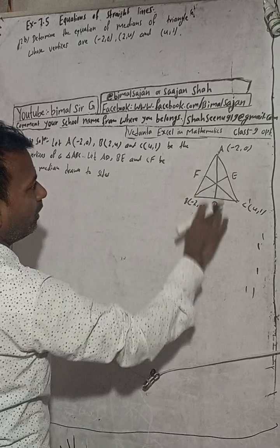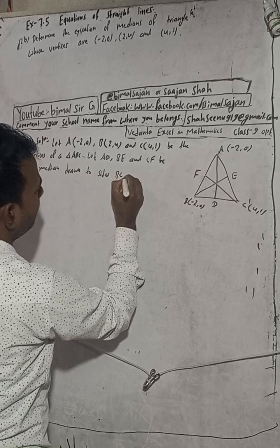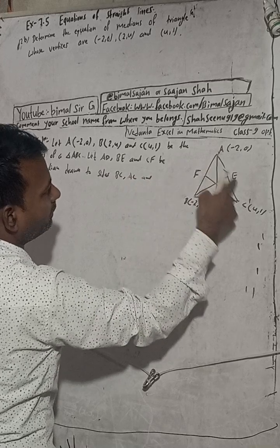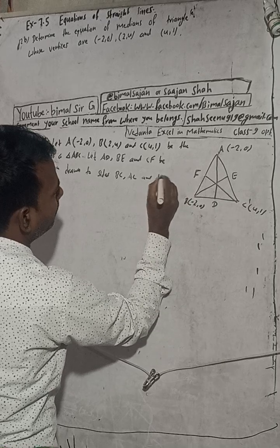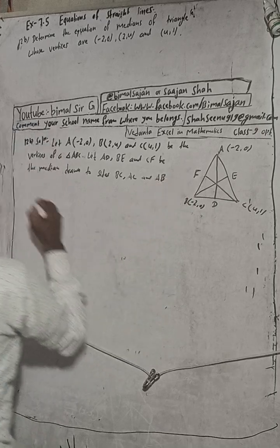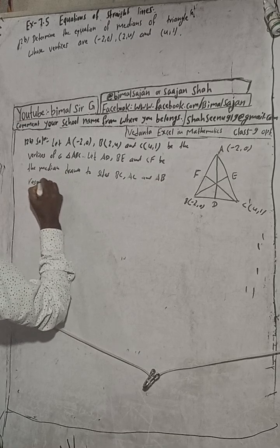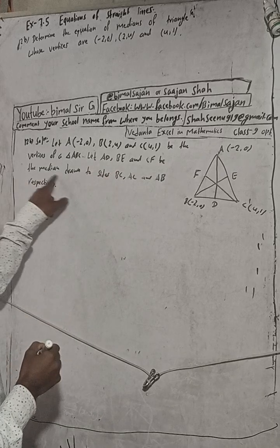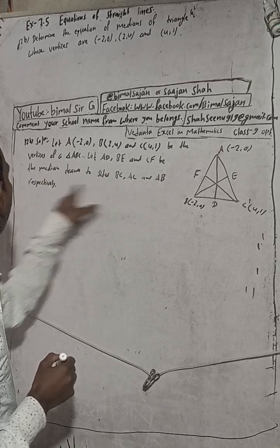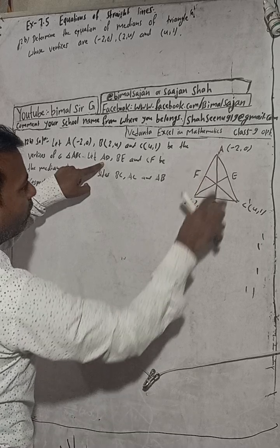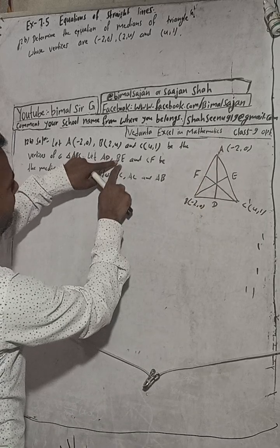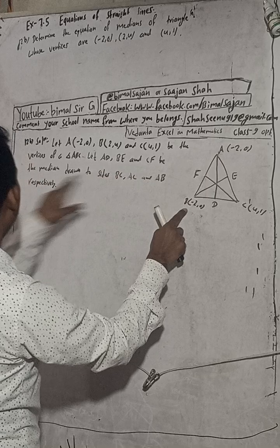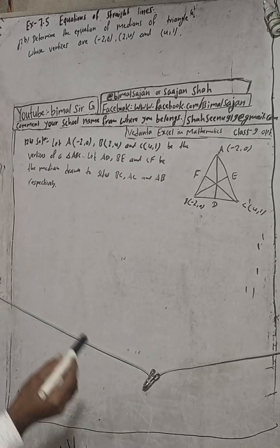We have drawn median AD to side BC, median BE to side AC, and median CF to side AB respectively. So AD is drawn to side BC, BE is drawn to side AC, and CF is drawn to side AB.